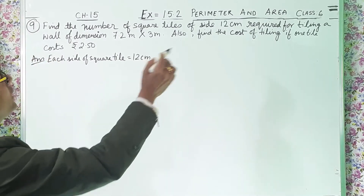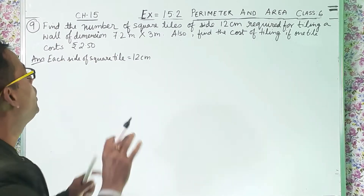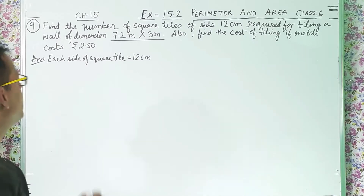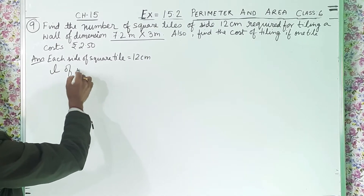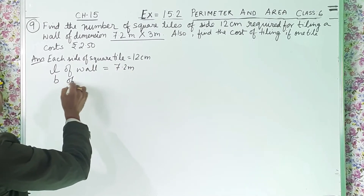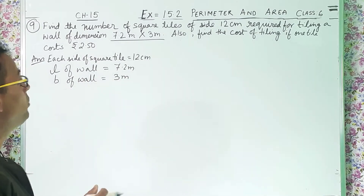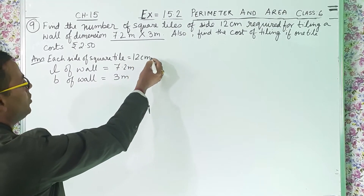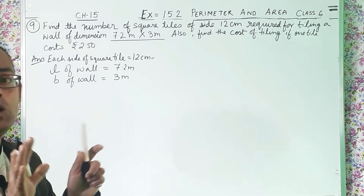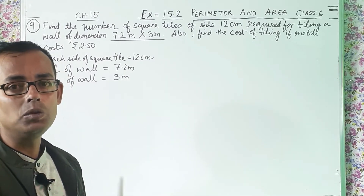Now, required for tiling a wall of dimensions — these tiles we are going to put on a wall whose dimensions are 7.2 meter into 3 meter. That means length of wall is 7.2 meter and breadth of wall is 3 meter. But if you see, one measurement is in centimeter and the other is in meter, so the units are not same.